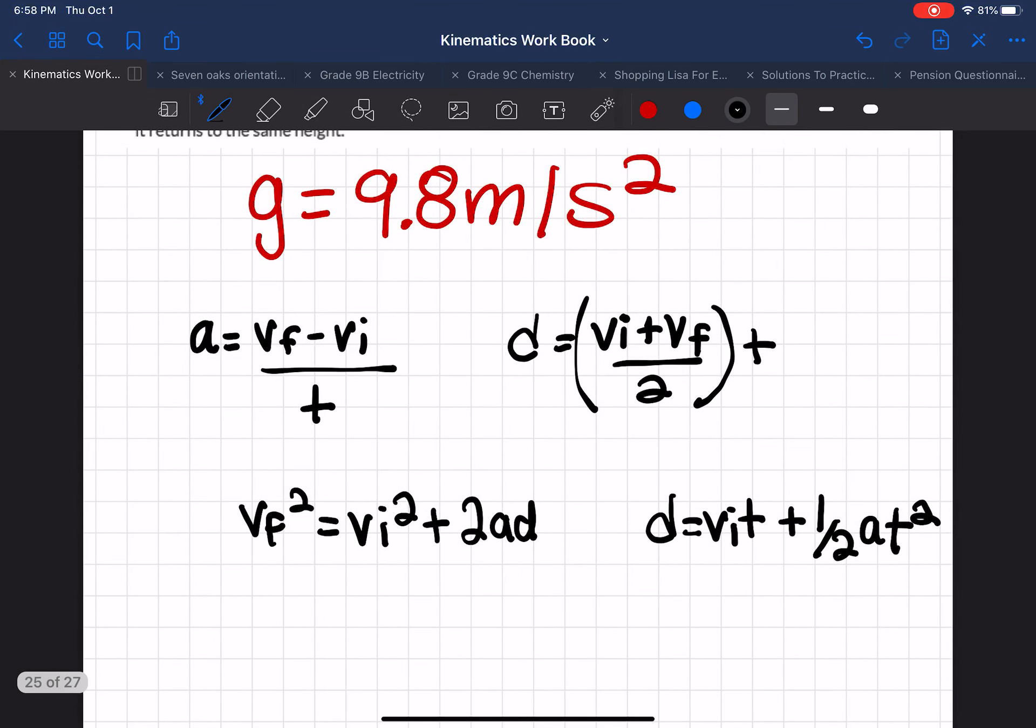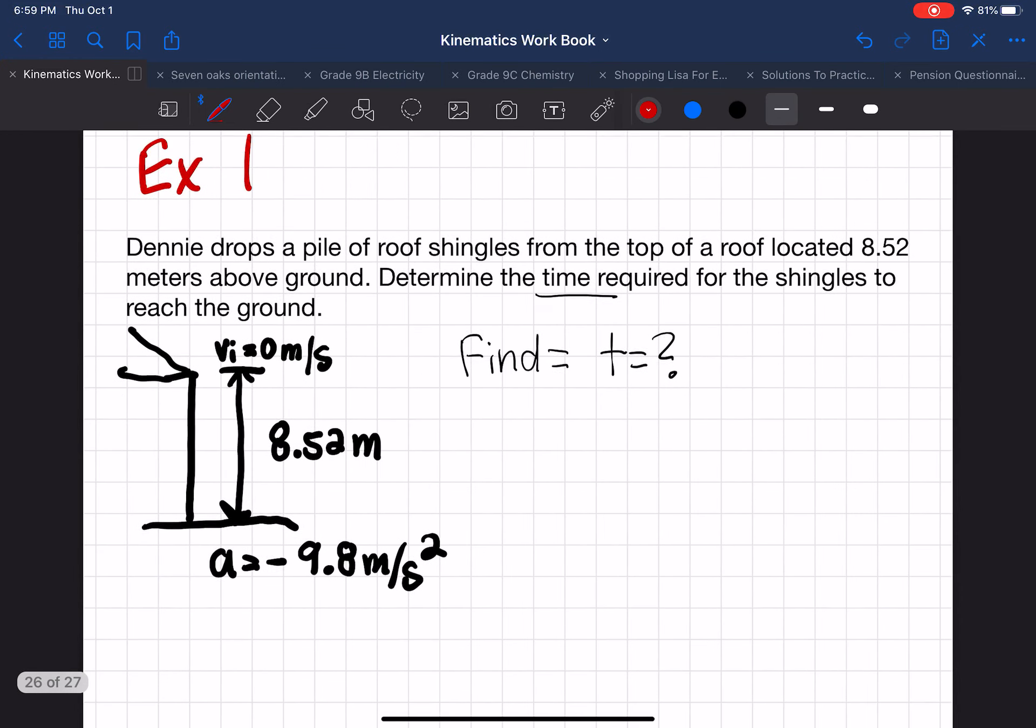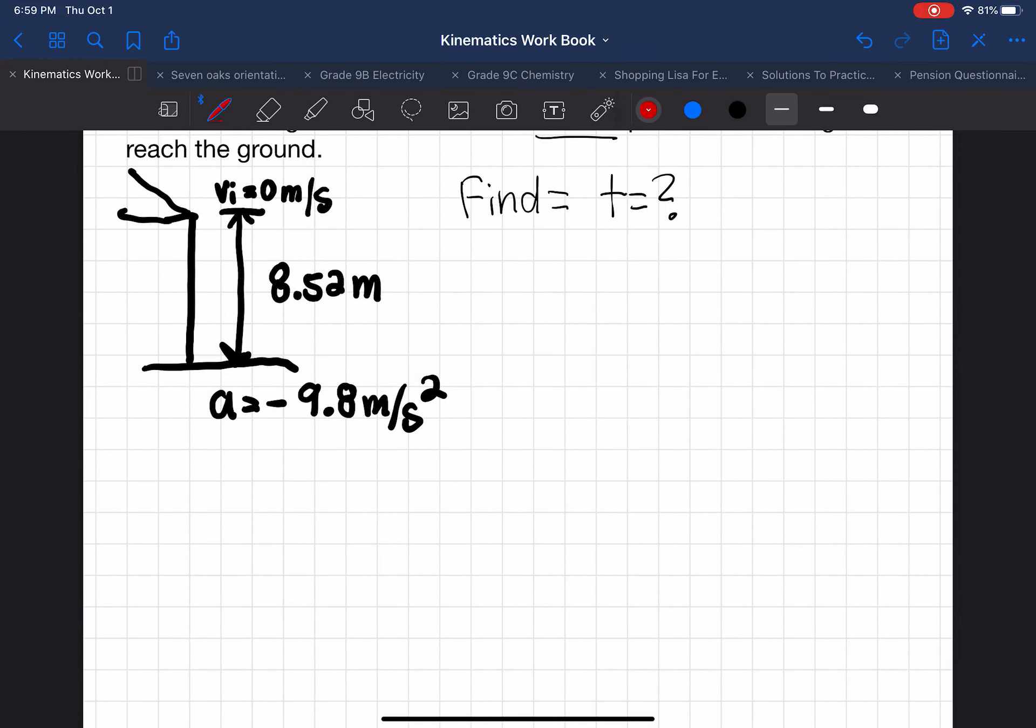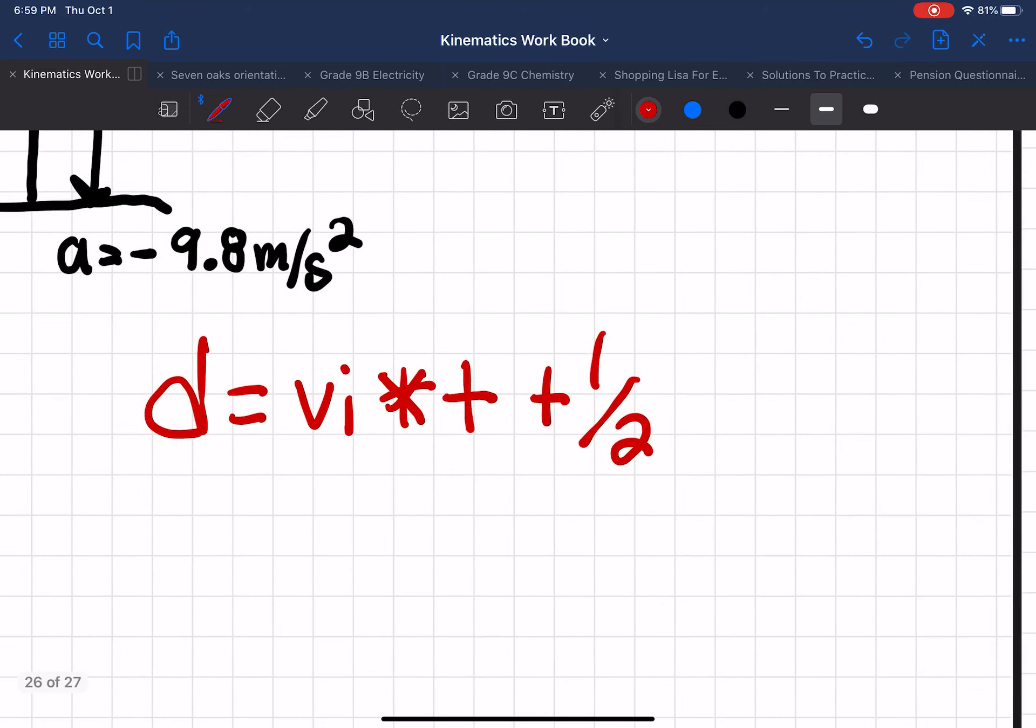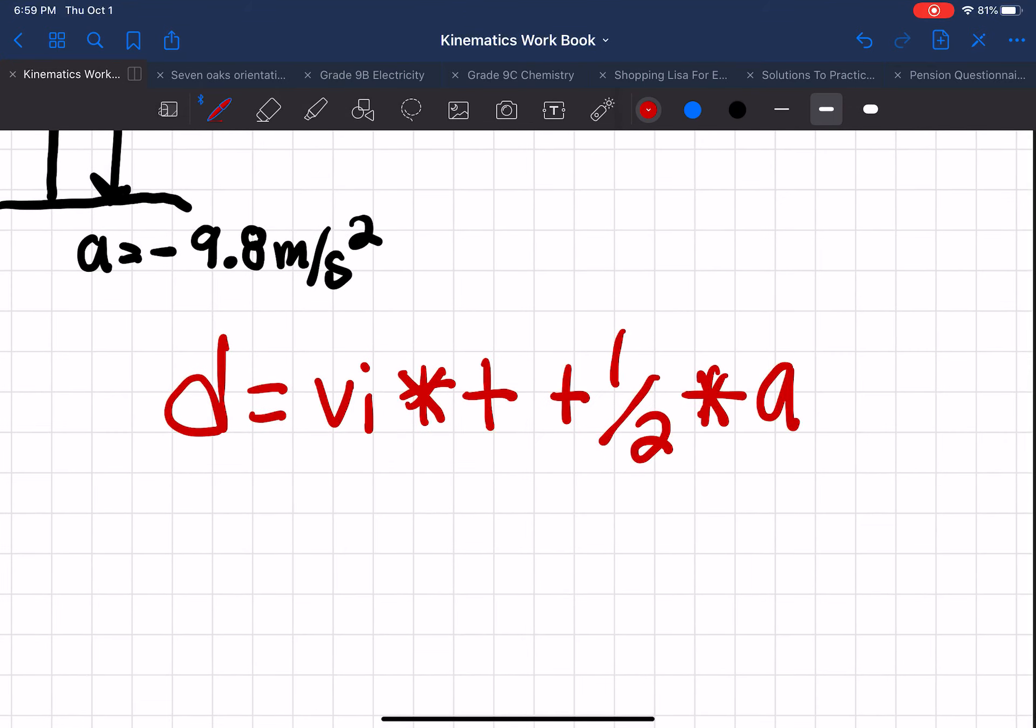We have a bunch of equations here, and we know that we don't have the final velocity. So that means it's going to cancel a bunch of equations that we can use. That means we can use this one right here. So let's transfer that over into our questions page here and write that down. So we can use the equation d equals initial velocity times time plus one-half times acceleration times time squared.